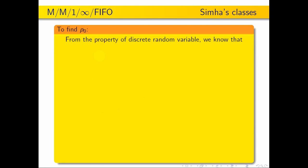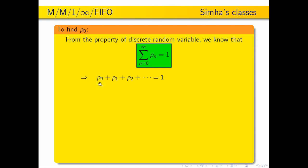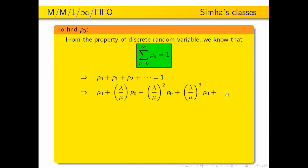We know that from the property of a discrete random variable, the total probability is equal to 1. So P0 plus P1 plus P2 plus etc., equal to 1. Now, P1 is equal to lambda by mu into P0. P2 is equal to lambda by mu whole square into P0. P3 is equal to lambda by mu whole cube into P0, plus etc., equal to 1.